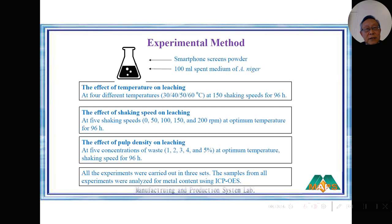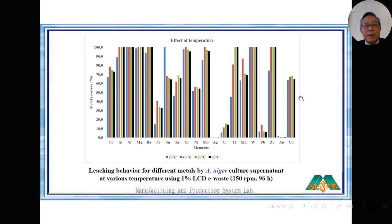For optimization, three parameters were selected: temperature, shaking speed, and pulp density — how much waste we put into a fixed amount of spent media. The first results show that the effect of temperature is very mild: from 30°C up to 60°C all provide similar results. In the following experiments we use a moderate 40°C so we don't need to input too much heat as energy.